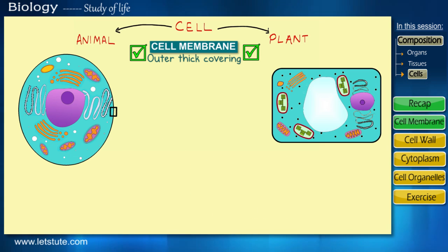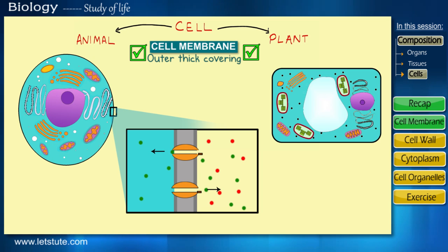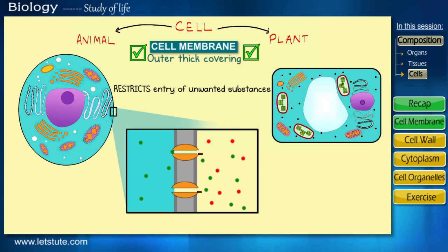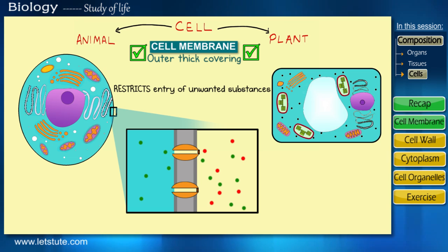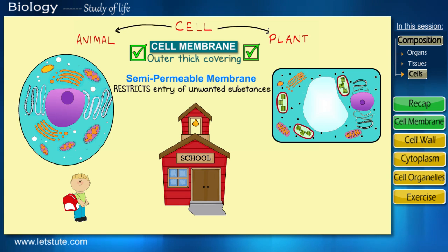This covering of the cell is not completely closed. It has small pores, or we can say gates, which allow the entry or exit of substances. Now simultaneously this membrane also restricts some substances which are not needed by the cell, and scientifically we call such a membrane a semi-permeable membrane. So in a simple way we can imagine it to be a school gate which allows only the students and teachers of that school to enter.